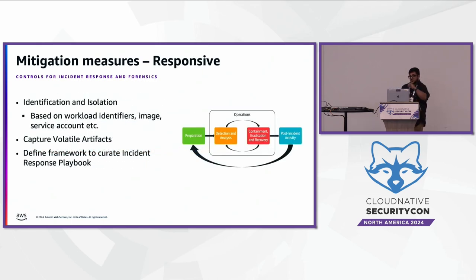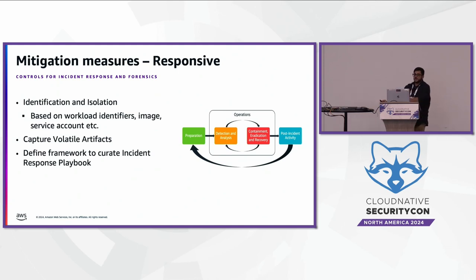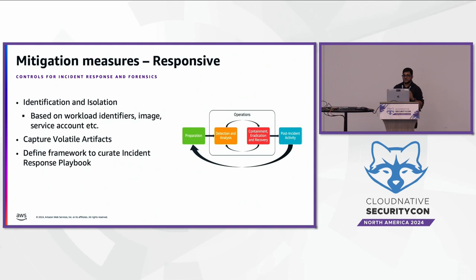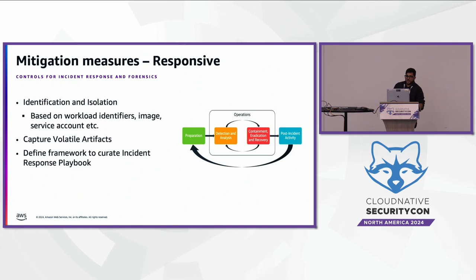Responsive measures are essentially the incident response part — once an event happens, how do you respond? Often when such things occur, you write a correction of error statement, do an RCA, and record it. That process has to be standardized with a framework to ensure your incident response playbooks adhere to certain organizational standards for Kubernetes clusters. This could be based on workload identifiers, service accounts, or whatever object you use within Kubernetes.